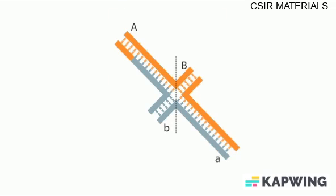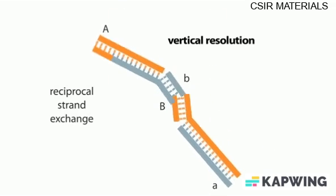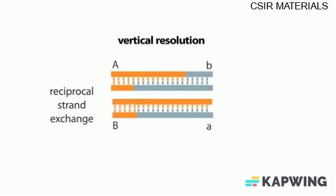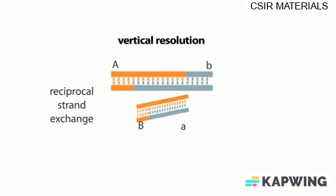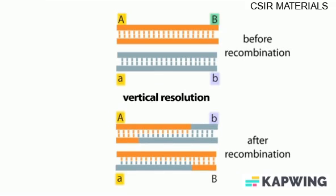The up-down cut, or vertical resolution, results in reciprocal strand exchange, with double-stranded DNA being transferred between the two molecules, such that the end of one molecule is exchanged for the end of the other. This reciprocal strand exchange is the DNA transfer event that occurs during crossing over in meiosis and generates the different allele combinations present in gametes.